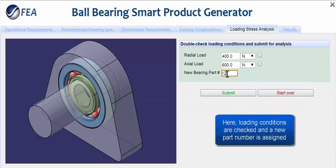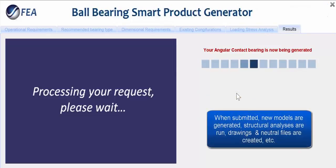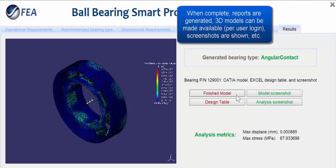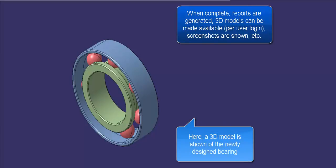Upon final submission, server processes are kicked off per the application requirements. Here, a new bearing CAD model is generated from the user's parameters, and a structural analysis is performed on the resulting geometry. When complete, user logins can tailor the deliverables they have access to, such as native CAD models, neutral files, and analysis results.